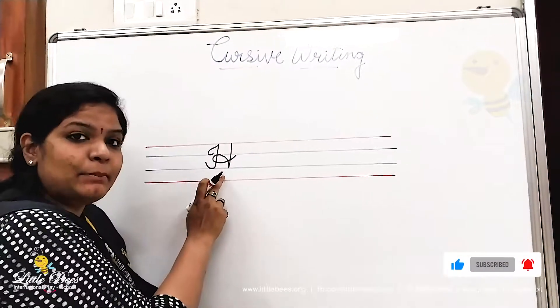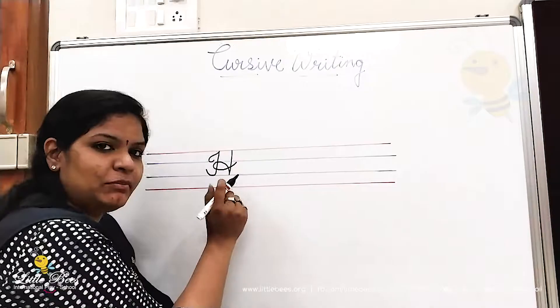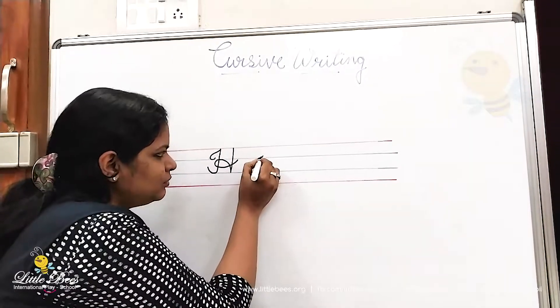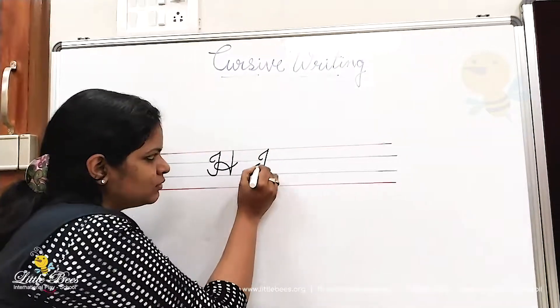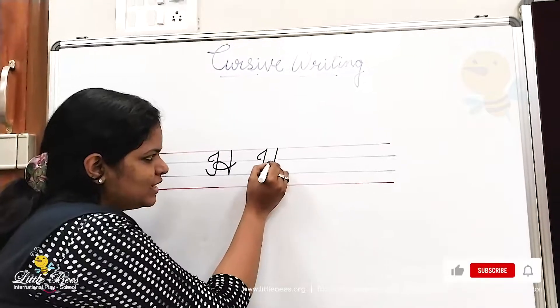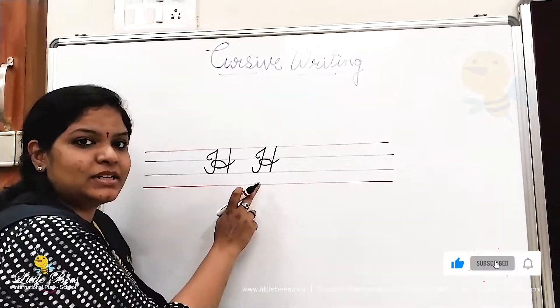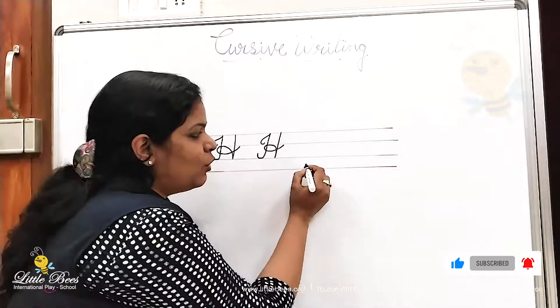So this is capital H. Shall we practice again? What is this? Cursive letter capital H. Now we will learn how to write small h.